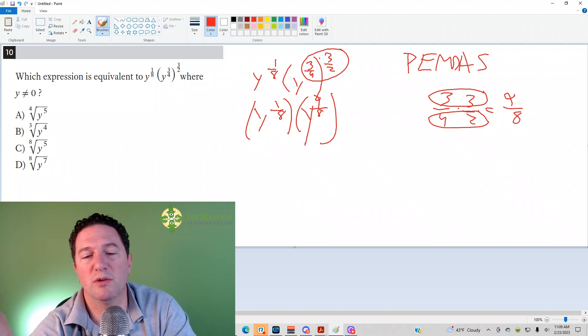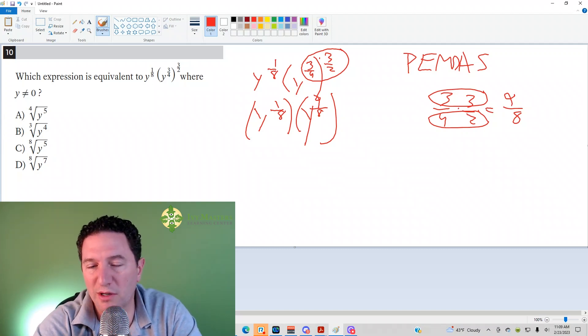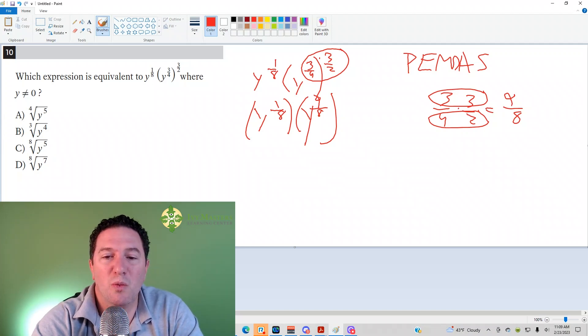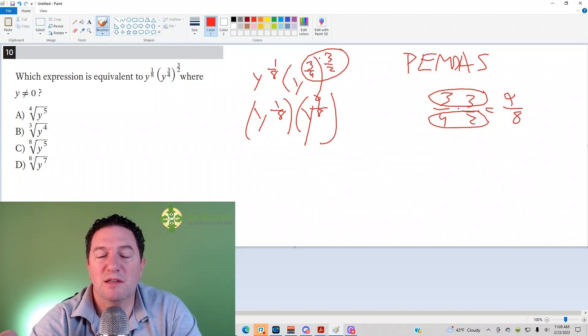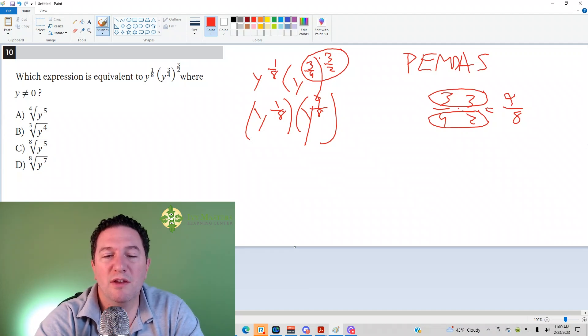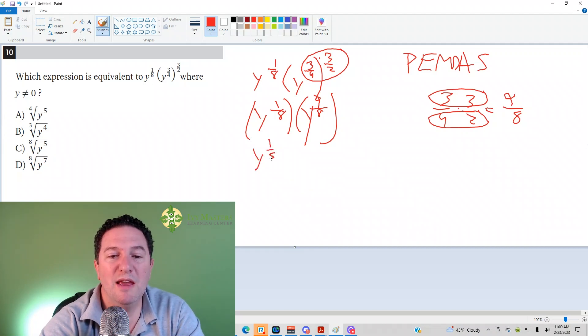I wrote that in a weird order. But what else do you have to keep in mind? When you multiply the same base, different exponents, then you have to add the exponents. This is the same as y to the 1 eighth plus 9 eighth.